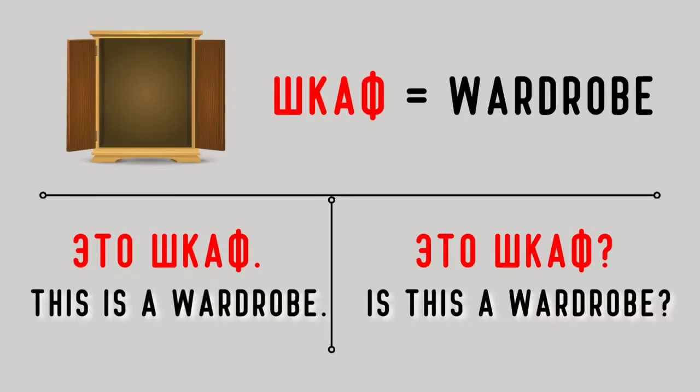Шкаф — wardrobe. Это шкаф. This is a wardrobe. Это шкаф? Is this a wardrobe? Это шкаф.